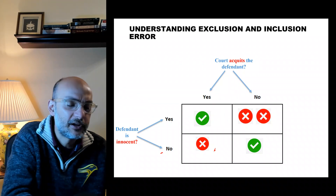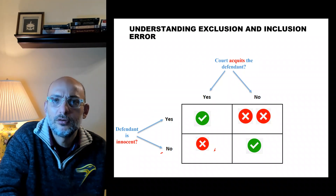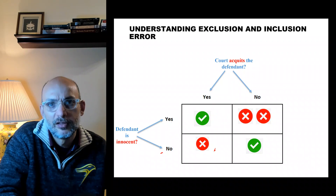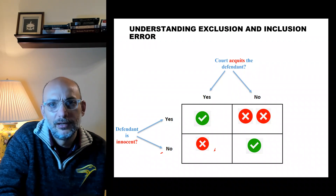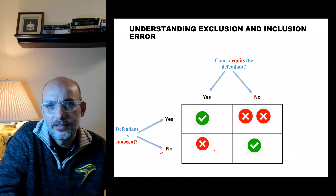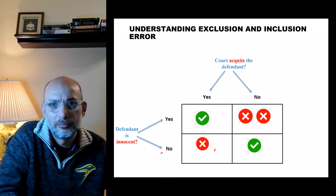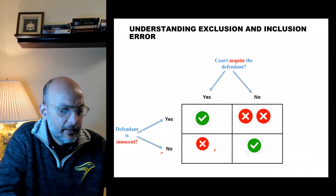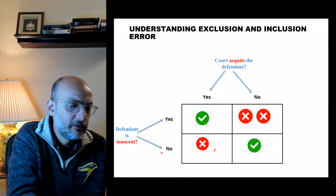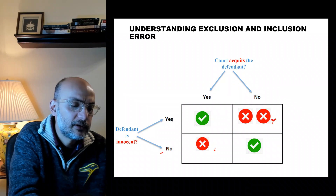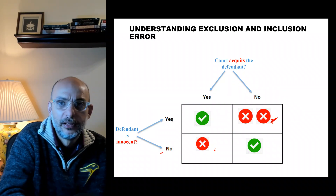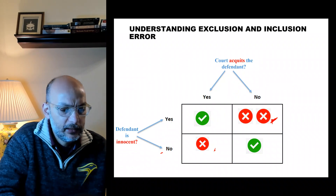Obviously we also feel bad that a criminal ran away, but because the presumption of innocence is established in modern societies, the first error — convicting an innocent person — is considered the severe error.